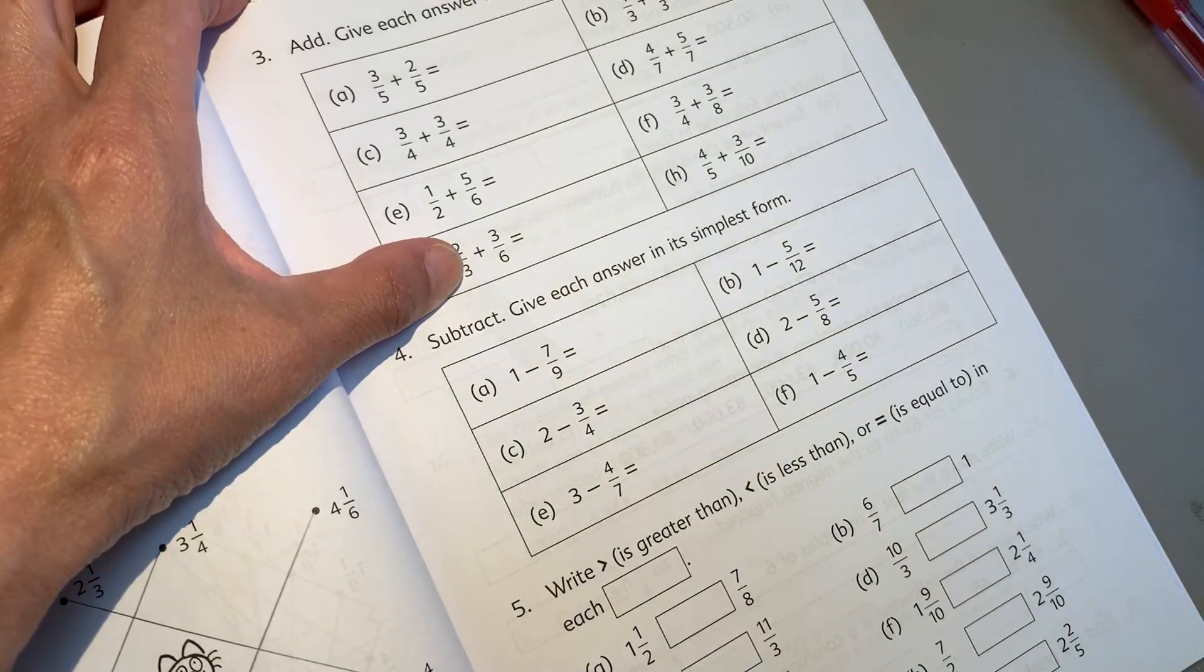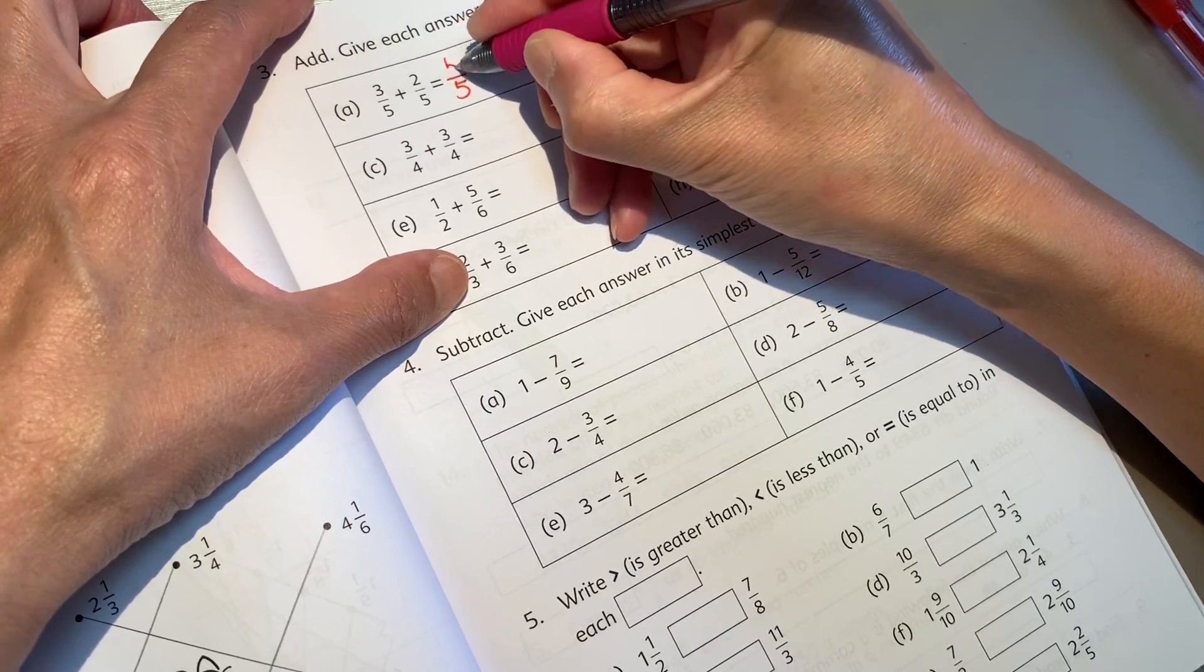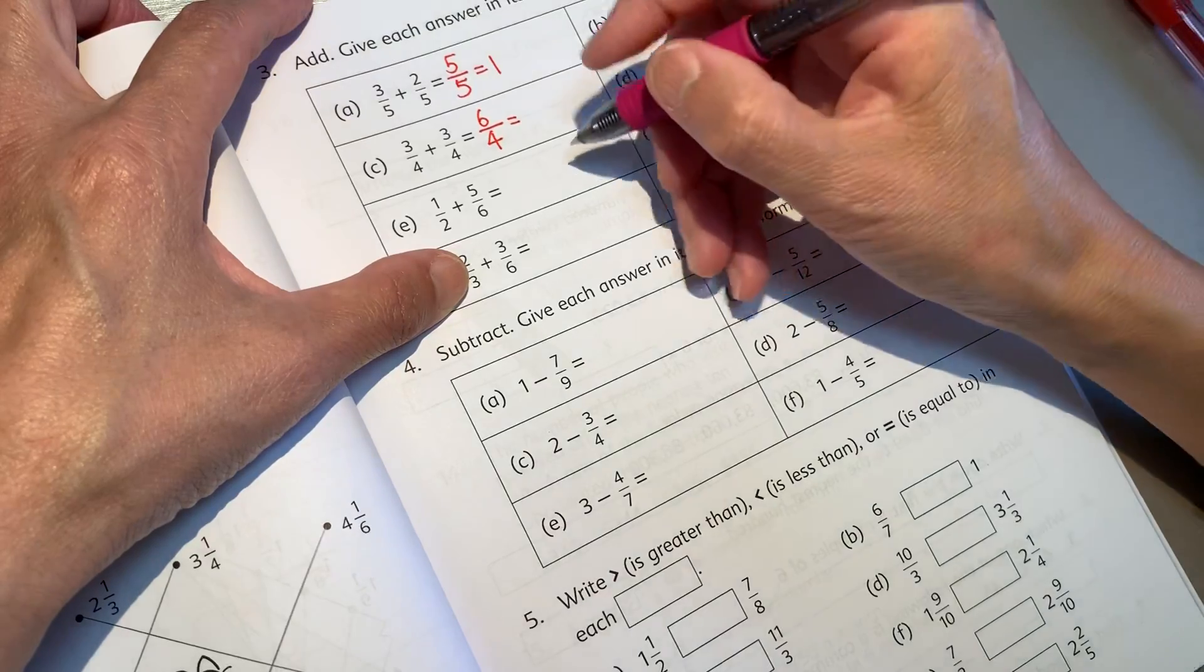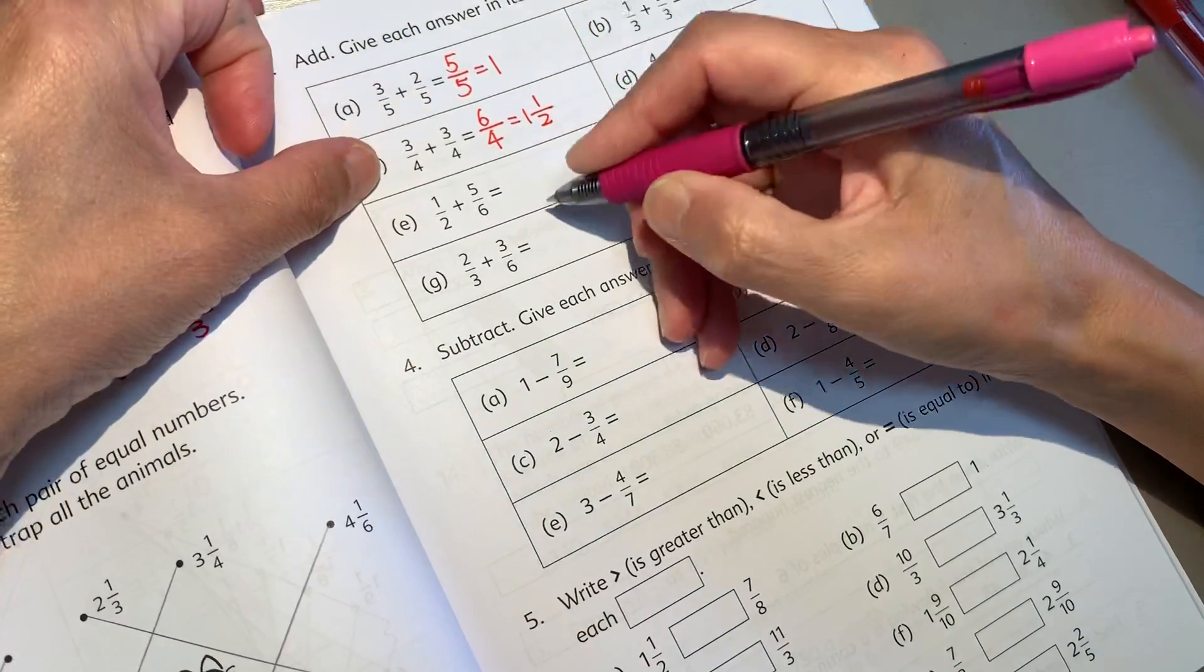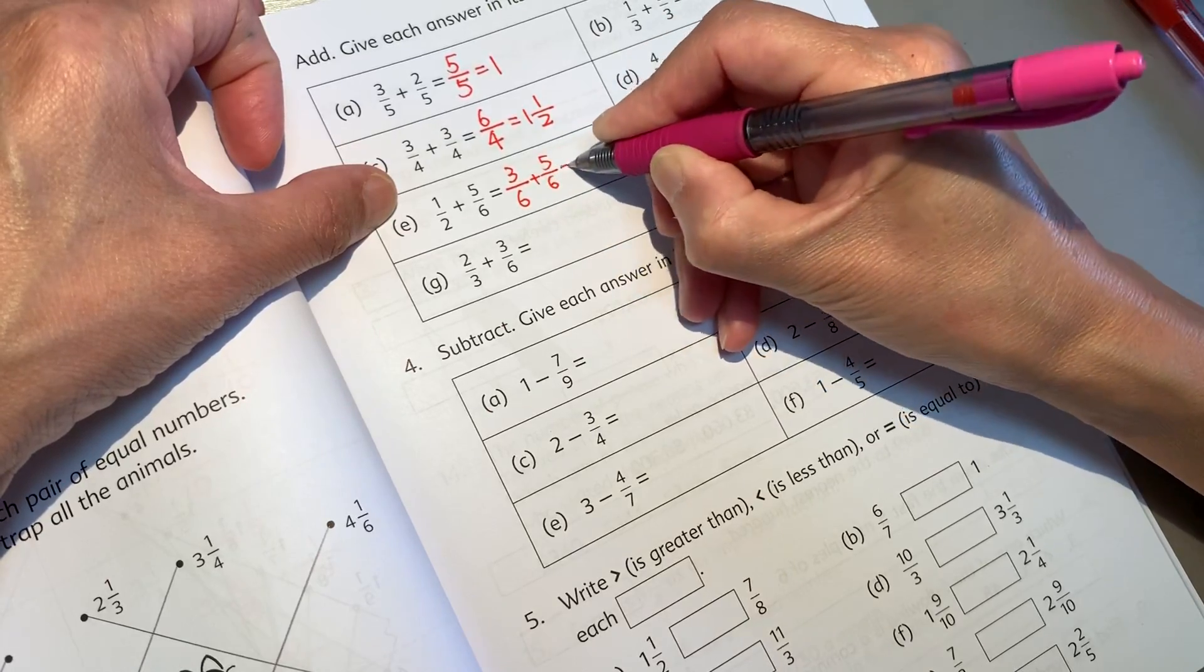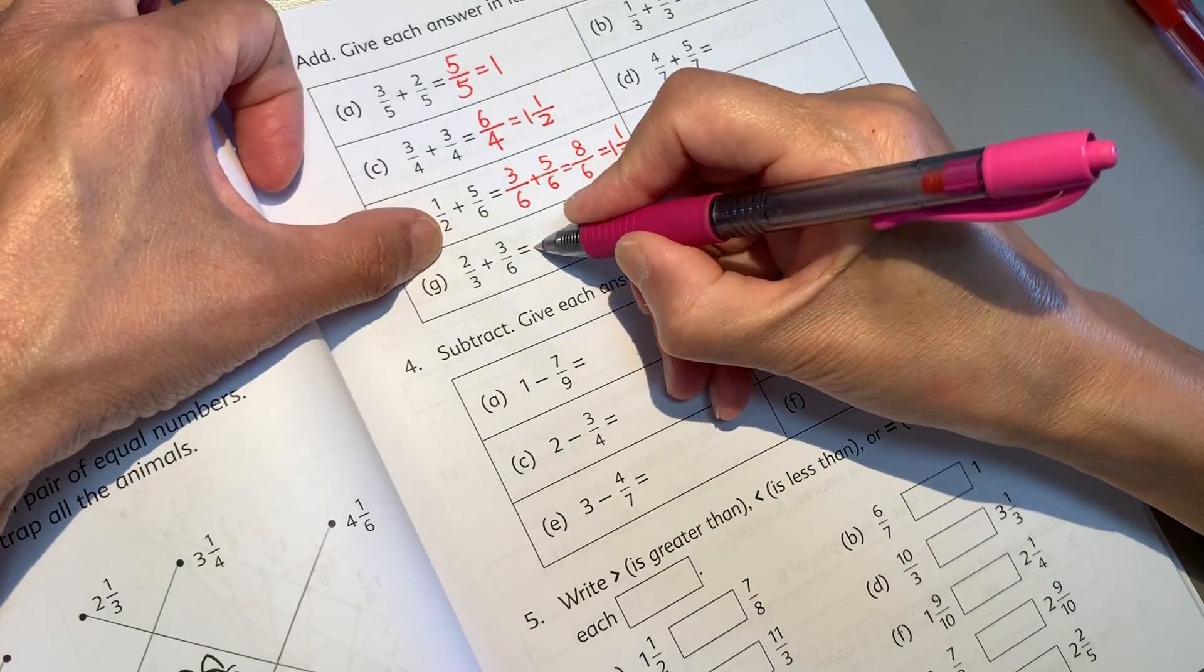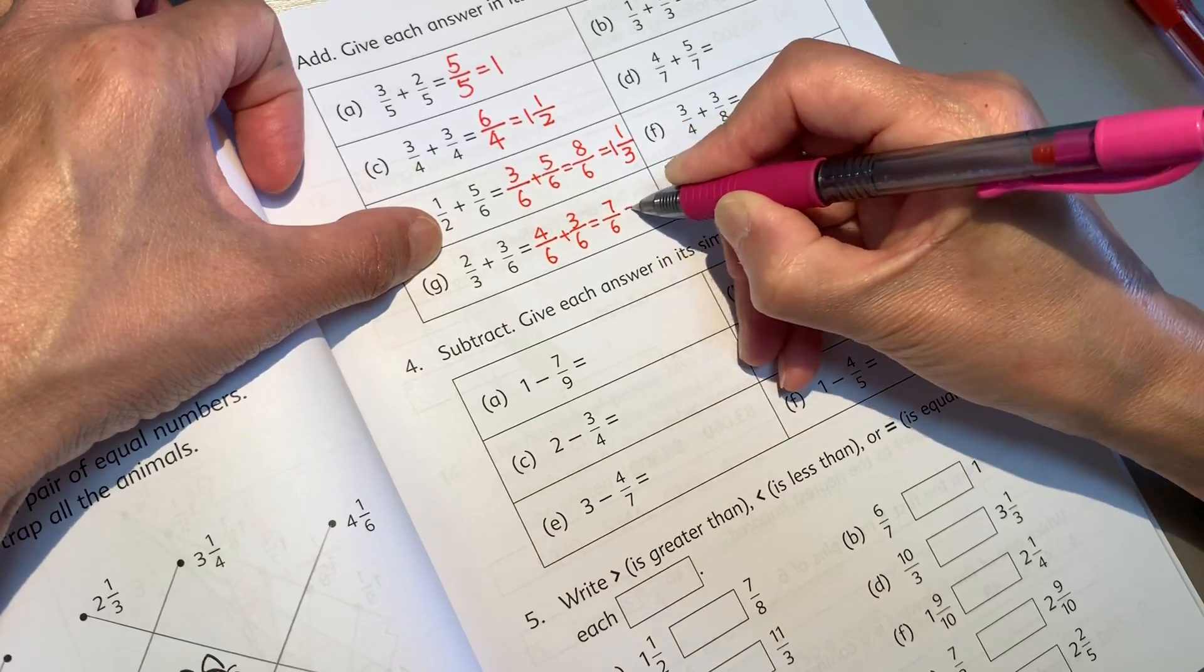The answer is simplest form. 5 over 5, 6⁴, 6⁴, 3⁴, 1⁴, 1⁴, 3⁴, 5⁴, 6⁴, 8⁴, 1⁴, 1⁴, 4⁴, 3⁴, 7⁴, 7⁴, 1⁴.